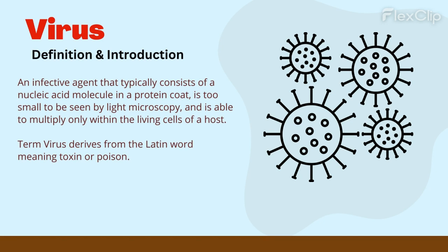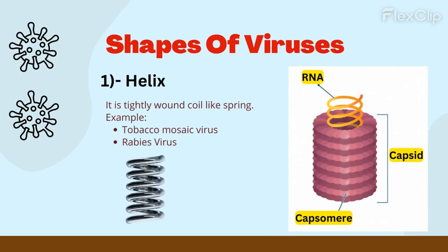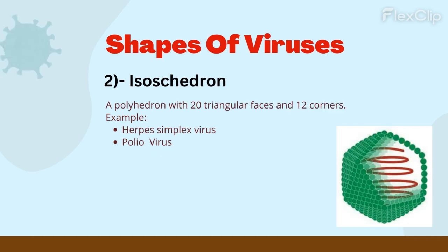Viruses have shaped the course of history and continue to challenge us. There are three basic shapes of viruses: helix, icosahedron, and complex. The helix is a tightly wound coil-like spring — for example, tobacco mosaic virus and rabies virus are helix-shaped, as shown in the video.